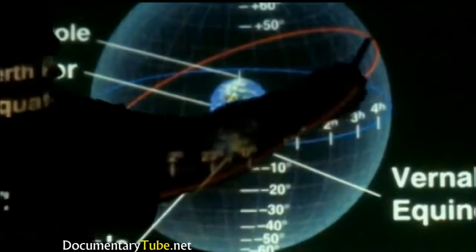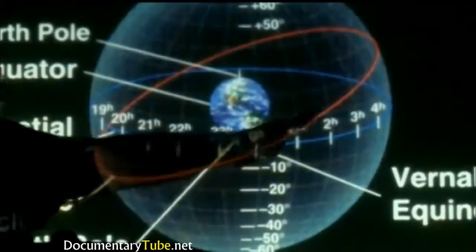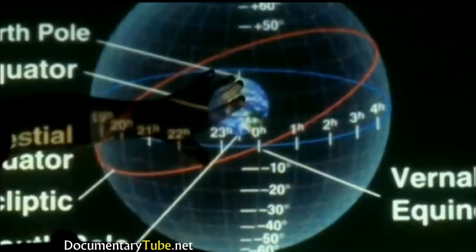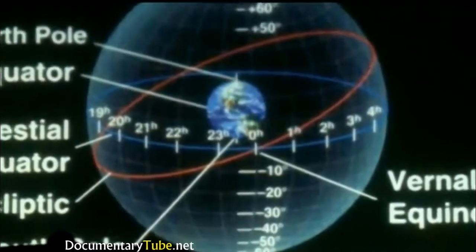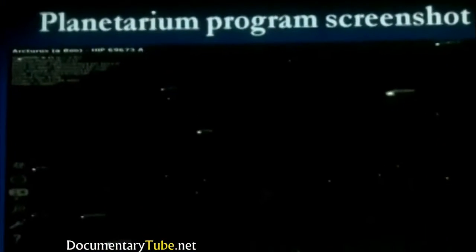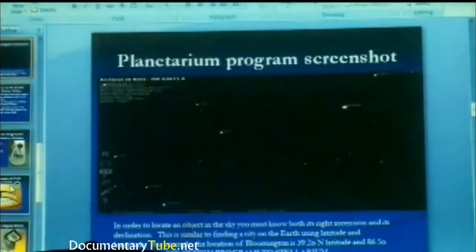This diagram also shows something called the ecliptic, which tracks the general path of the Sun, Moon, and planets. Notice how they're at an angle to the Earth. This is a screenshot of a planetarium program called Stellarium. In order to locate an object in the sky, you need to know both its right ascension and declination — similar to finding a city using latitude and longitude. For example, Bloomington is at 39.20 north latitude and 86.50 west longitude. We'll now switch to Stellarium to make this clearer visually.